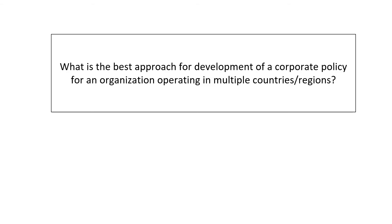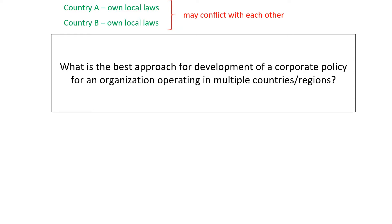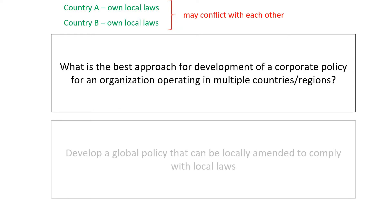What is the best approach for development of a corporate policy for an organization operating in multiple countries and regions? Multiple countries and regions means different countries have their own local laws, and they may conflict with each other. The best way to prevent this is to develop a global policy that can be locally amended to comply with the local laws.